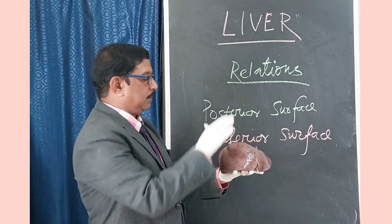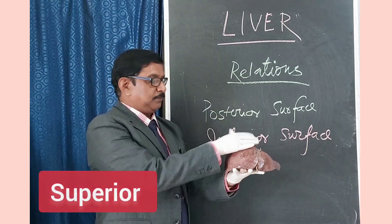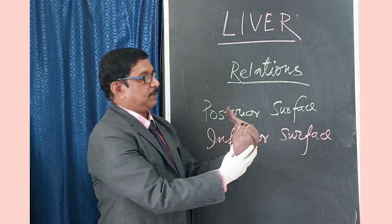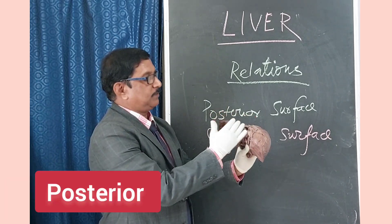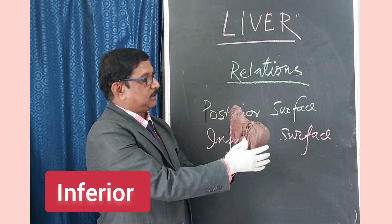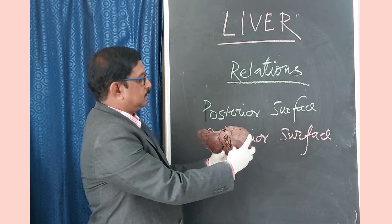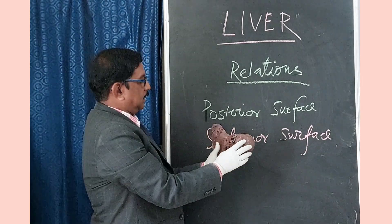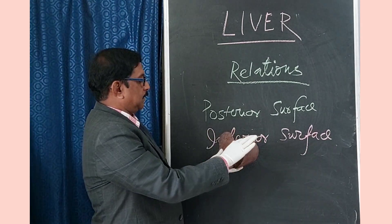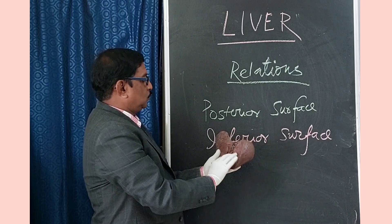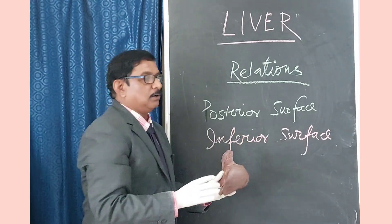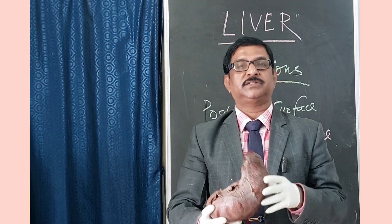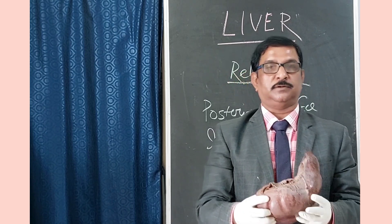There are five surfaces of liver: superior surface, then anterior surface, right lateral surface, then posterior surface and inferior surface. Today I will show you the relations on the posterior surface and the relations on the inferior surface. These two surfaces are important from the examination point of view. Let us first discuss the relations on the posterior surface.